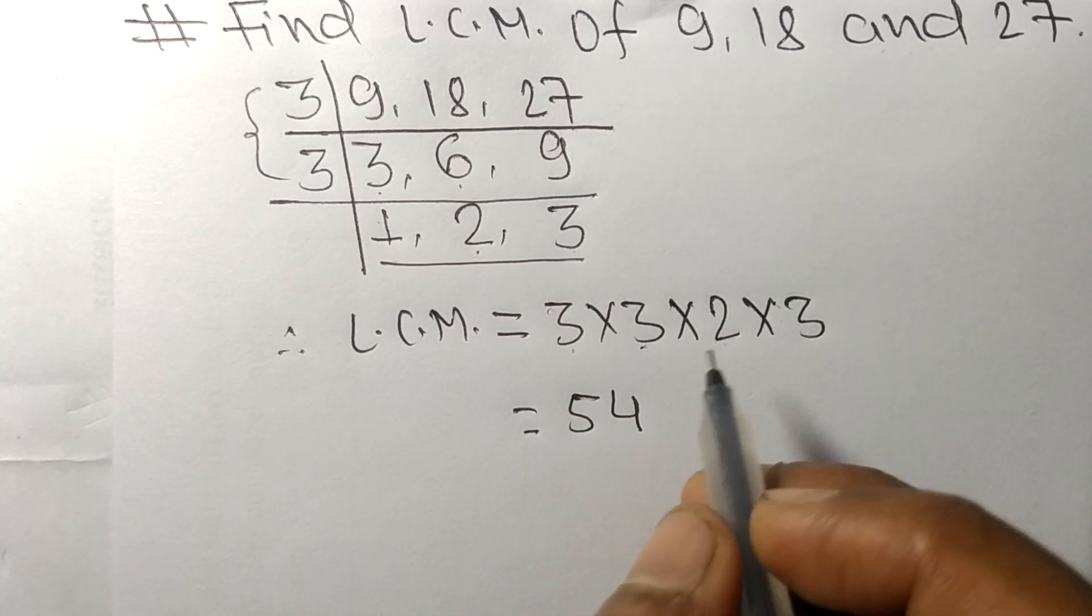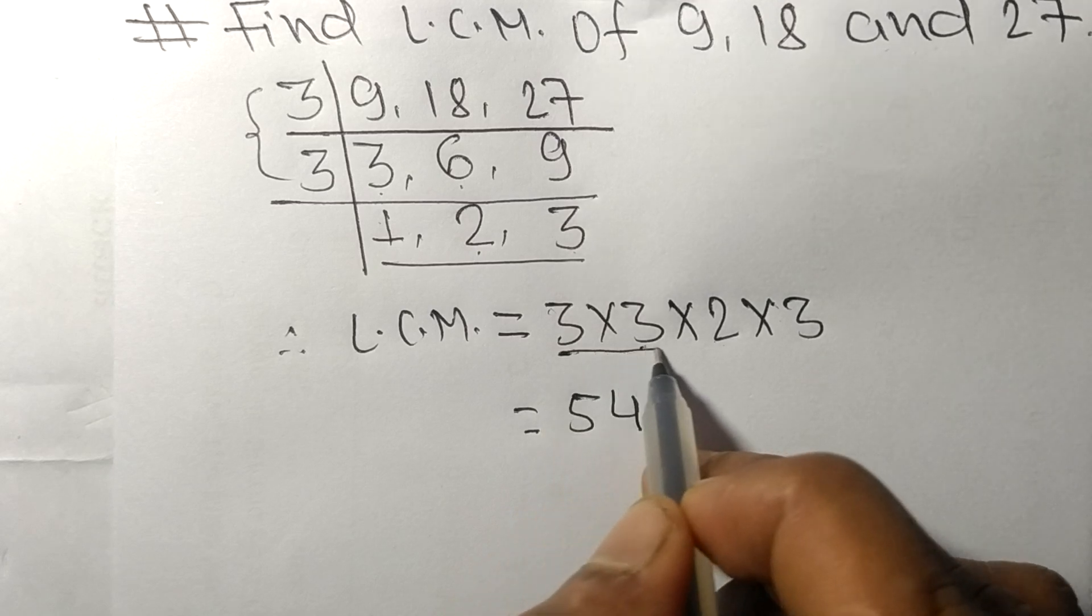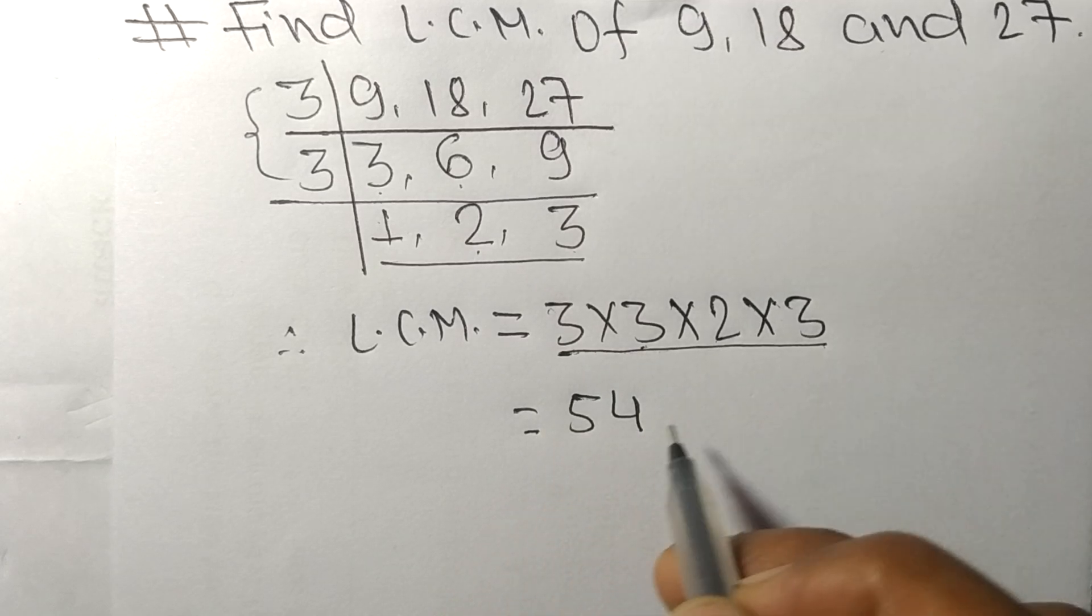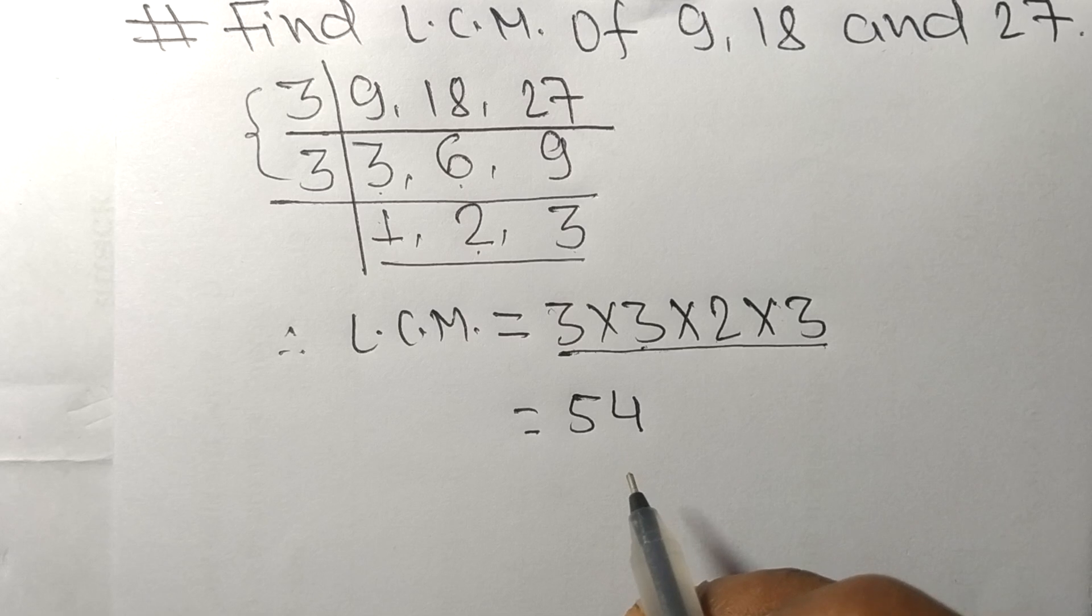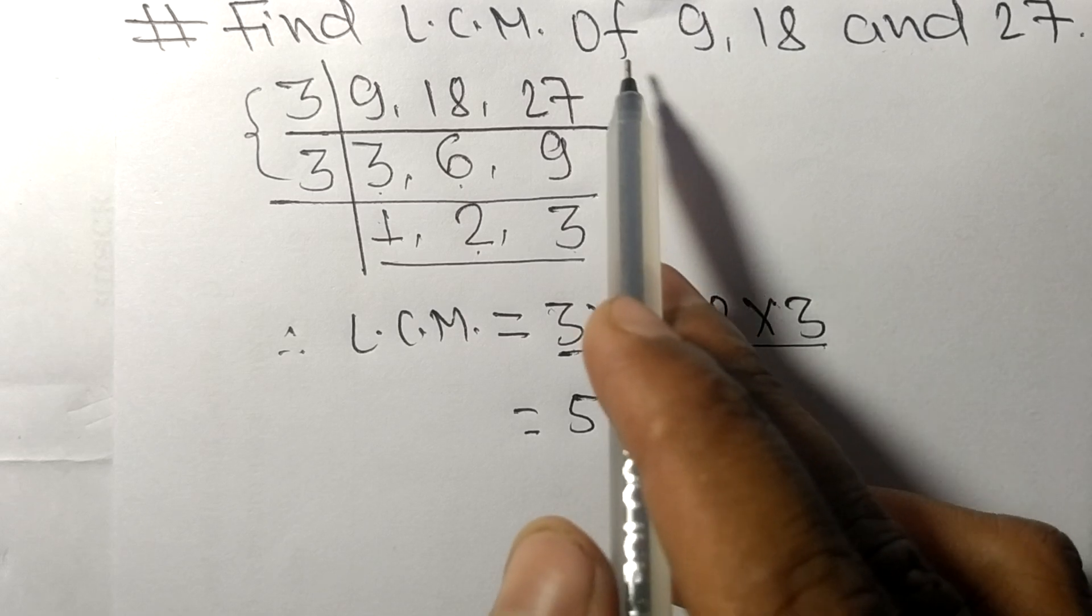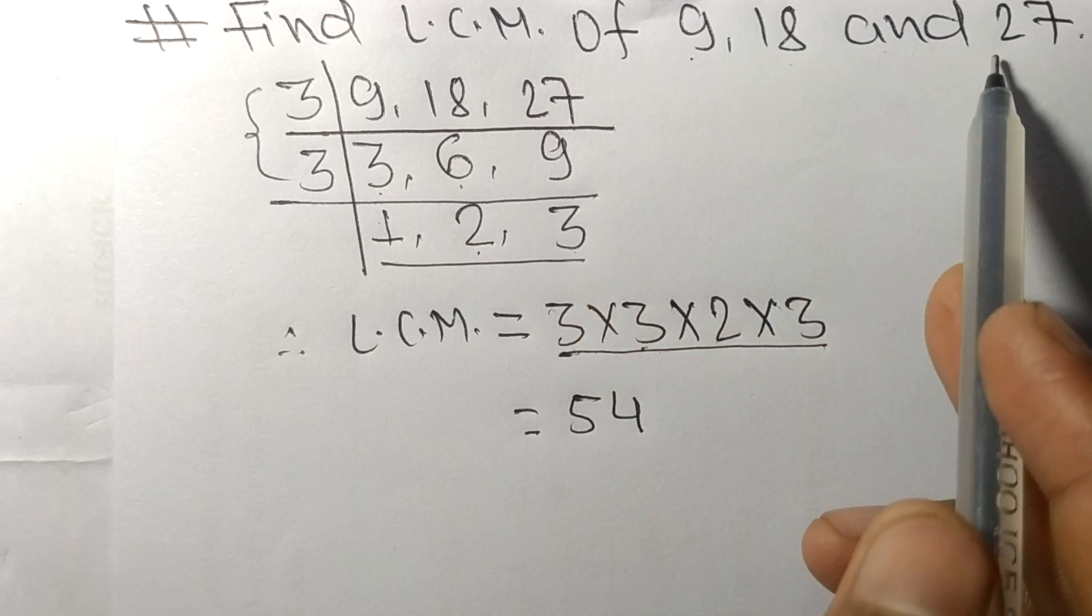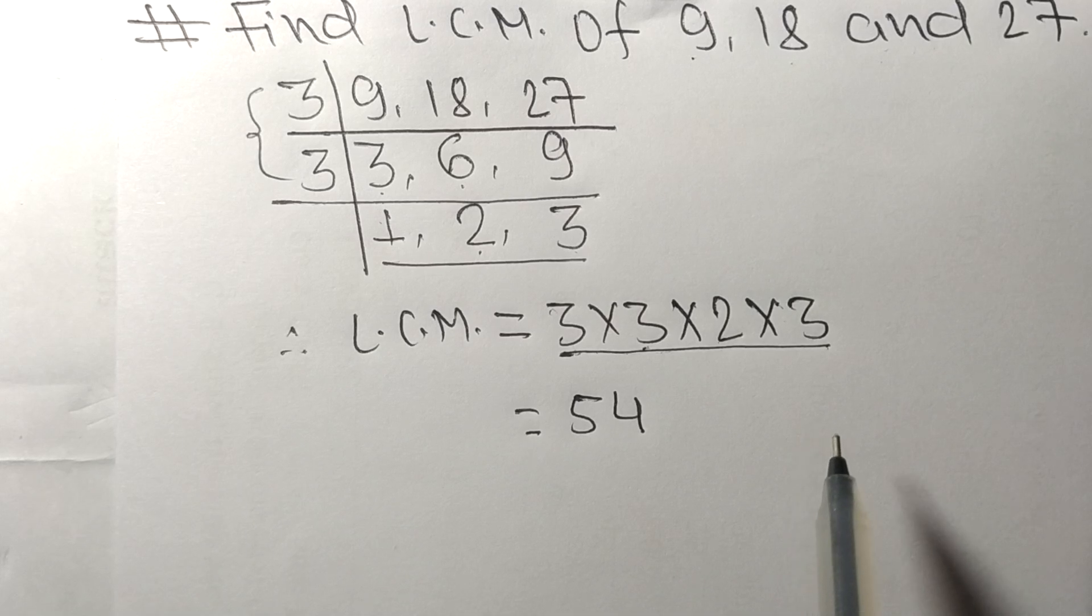54. So by multiplying all these numbers we got 54. So 54 is the LCM of 9, 18, and 27. So this much for today and thanks for watching.